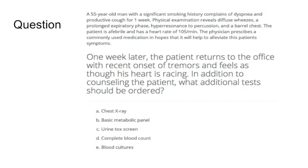So I'm going to read this first question. A 55-year-old man with a significant smoking history complains of dyspnea and productive cough for one week. The exam reveals wheezes and prolonged expiratory phase, hyperresonance to percussion, and a barrel chest. The patient is afebrile and has a heart rate of 105. The physician prescribes a commonly used medication to help alleviate the patient's symptoms. One week later, the patient returns with recent onset of tremors and feels as though his heart is racing. In addition to counseling the patient, what additional tests should be ordered? This is really a multi-step question.